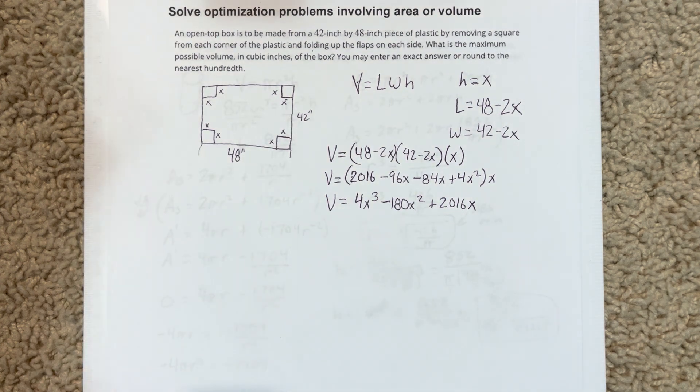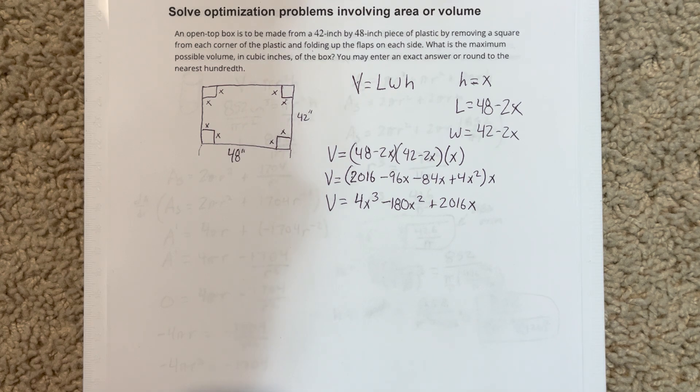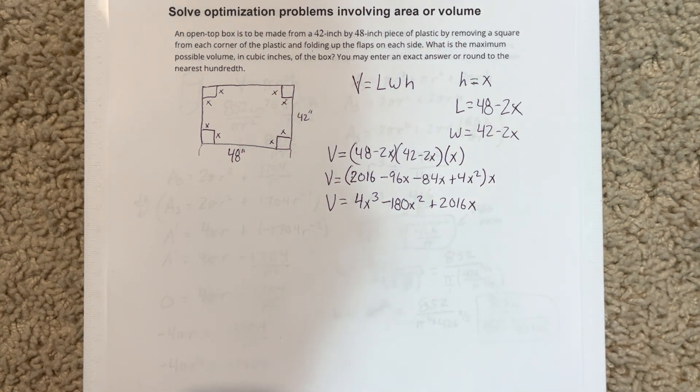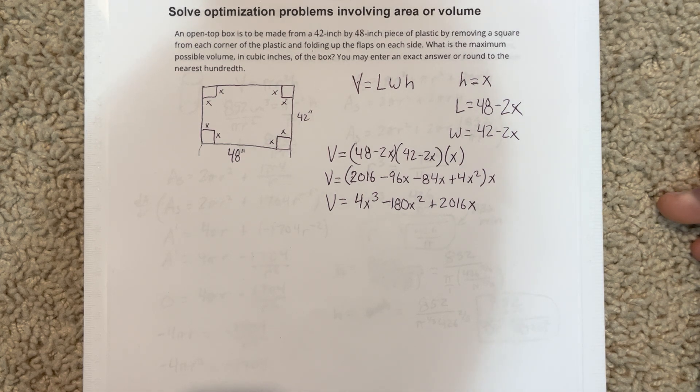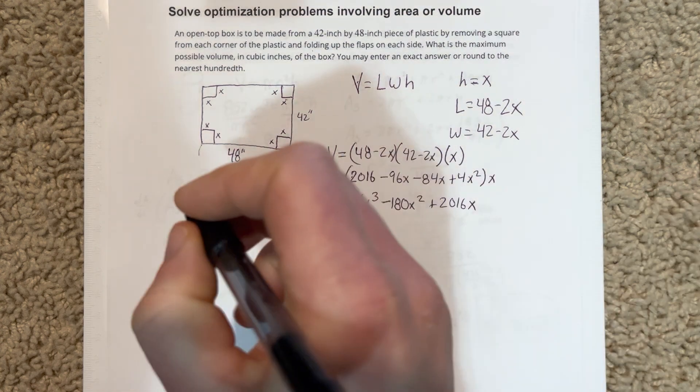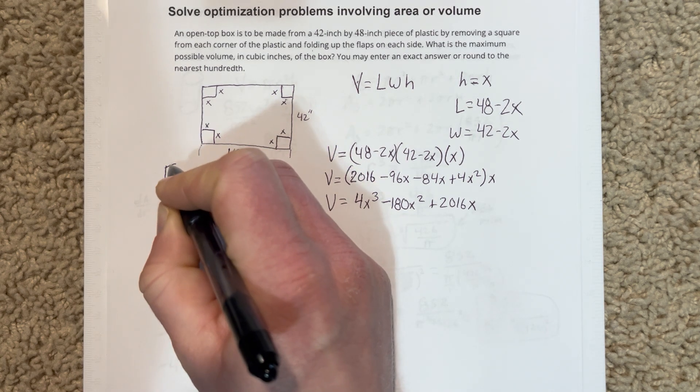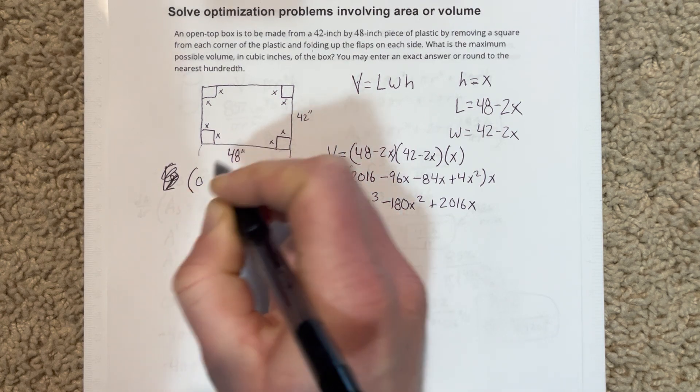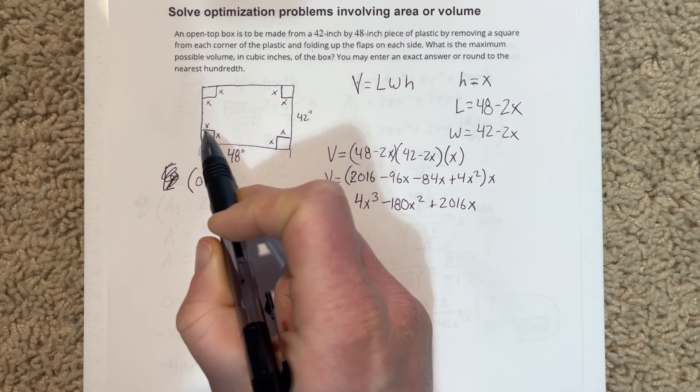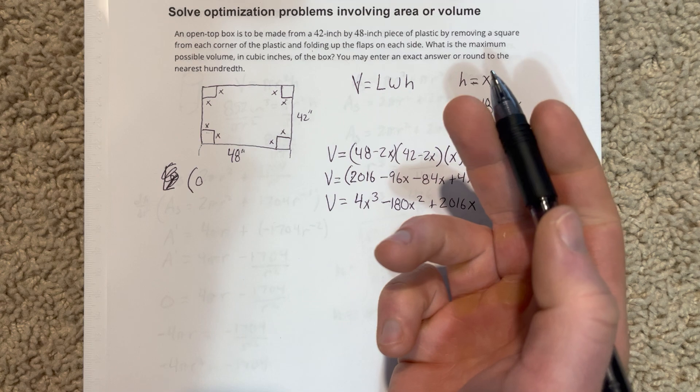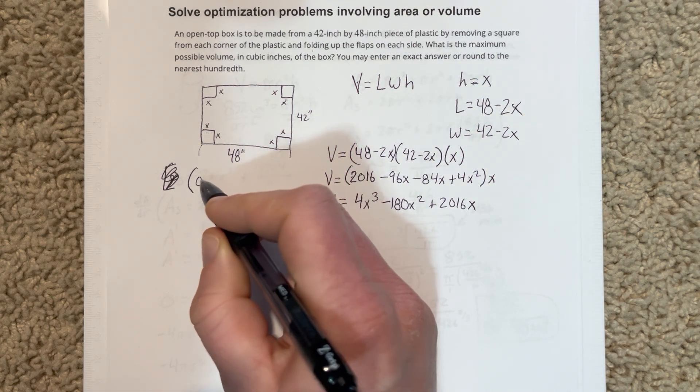We're actually going to apply the extreme value theorem to this. So the extreme value theorem basically says that the function needs to be continuous and be bounded. So we're going to bound this thing by saying that our values for X here have to range between zero and I shouldn't have a bracket there, that should be a parentheses on the zero. We cannot have the sides of this thing be zero. If the tabs were zero, then we wouldn't even have a box. So it has to be greater than zero.